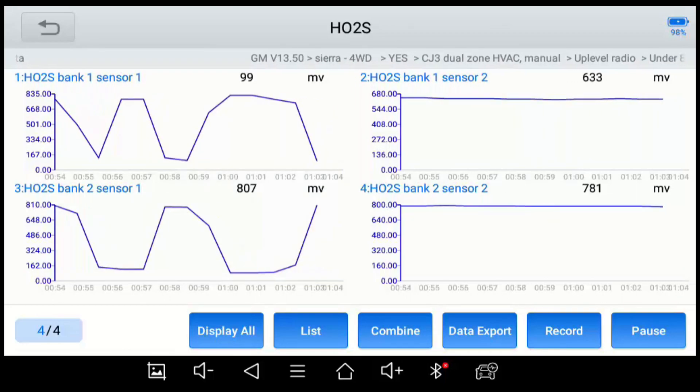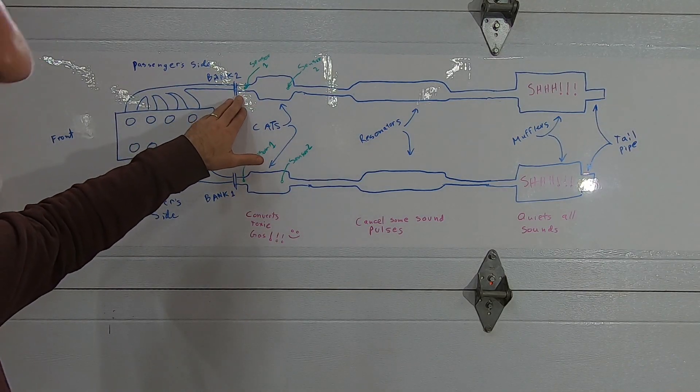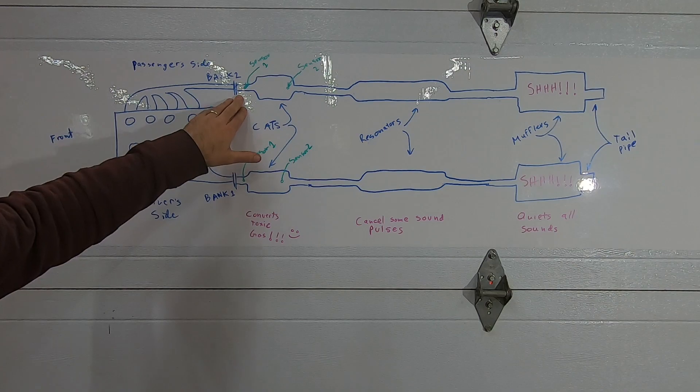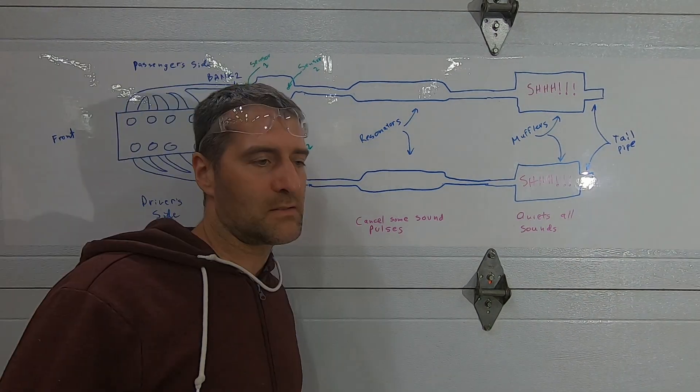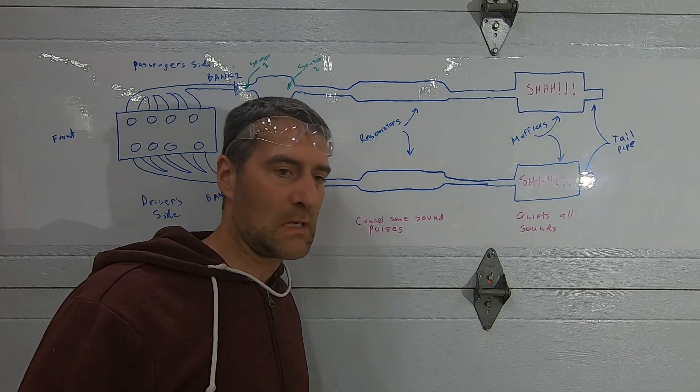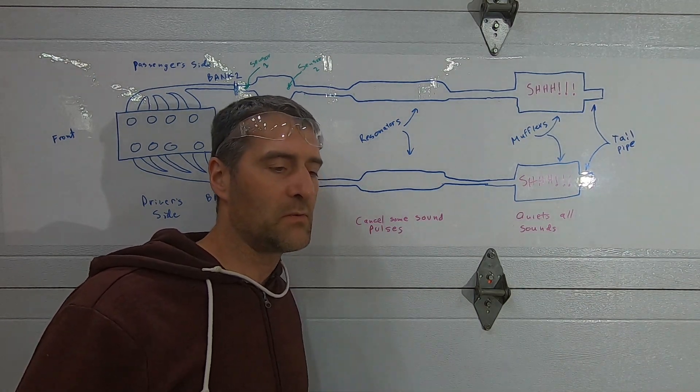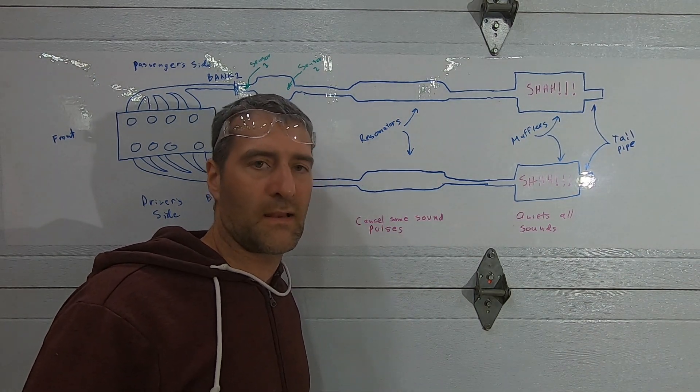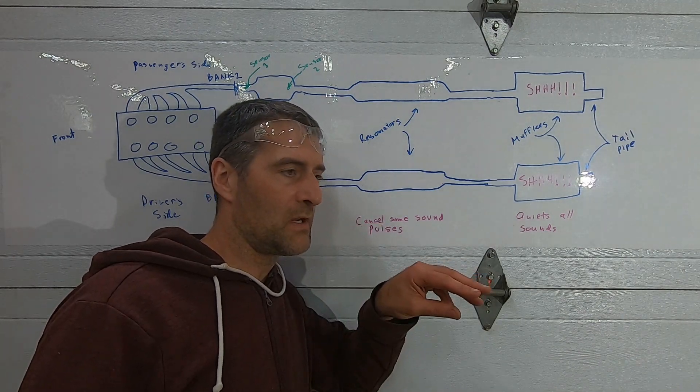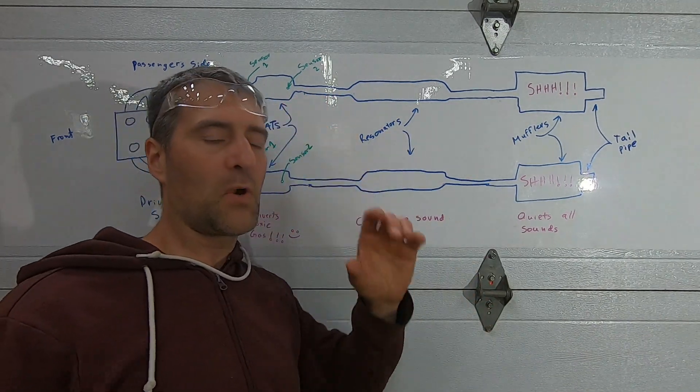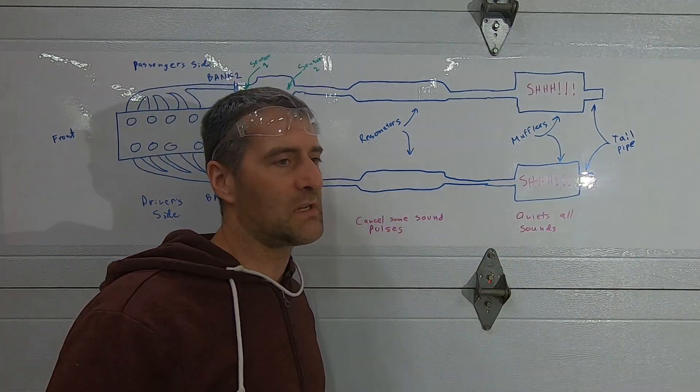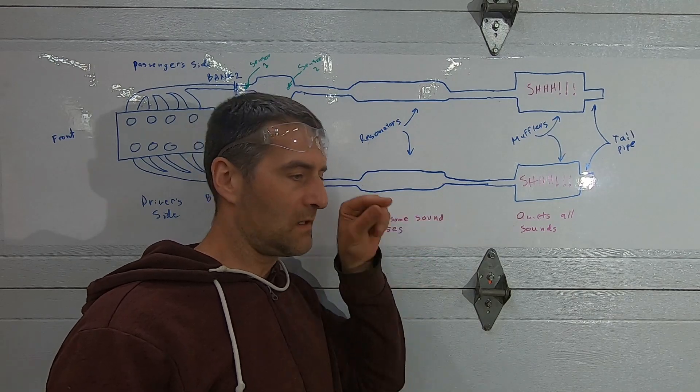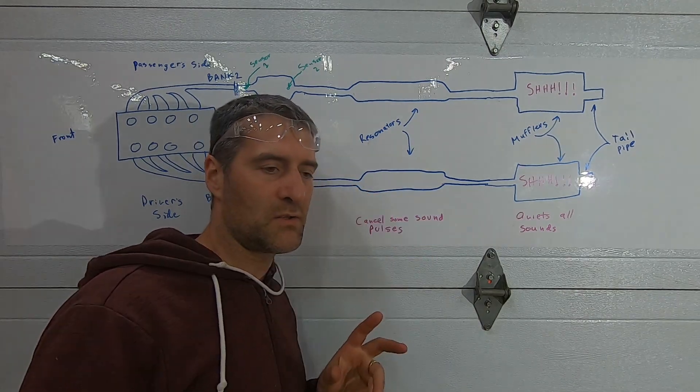The next test you can do, and this is test number seven, is you can remove the cat and visually look through them. Now this is kind of the hardest because it means you sometimes have to cut a pipe or you'd have to do a lot of unbolting, so it's sort of the last case. When you do this, you're going to be able to look through the honeycomb. If you hold it up to the sunlight or a bright light you should be able to see light passing through those honeycombs.